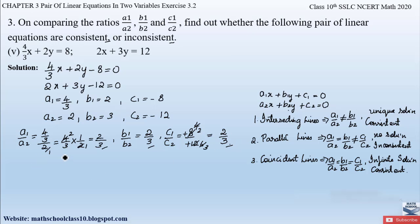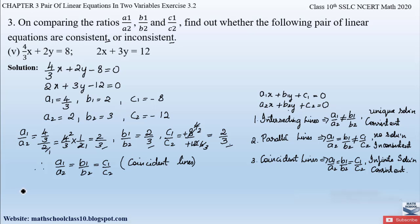Since all three ratios are equal to each other, the lines will be coincident, having an infinite number of solutions, and the pair of linear equations will be consistent. Therefore a1/a2 = b1/b2 = c1/c2, the lines are coincident, and hence the given pair of linear equations is consistent. This is how we solve question number 3.